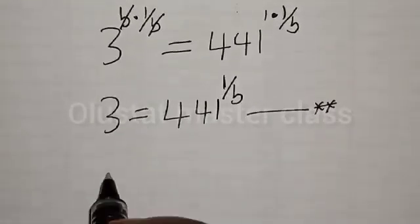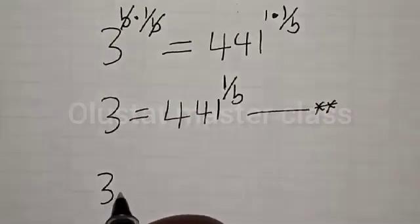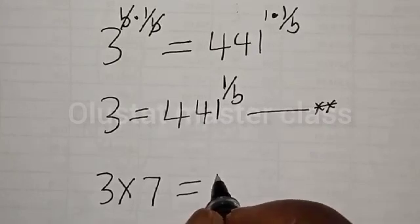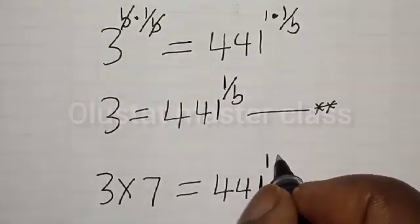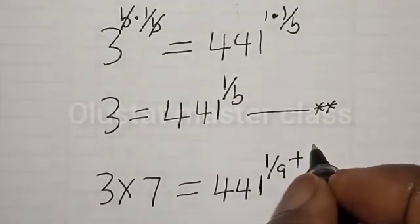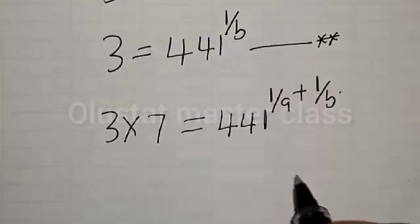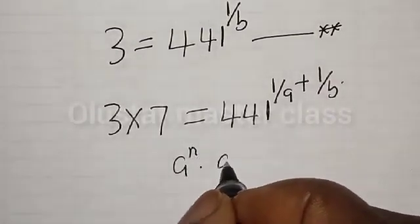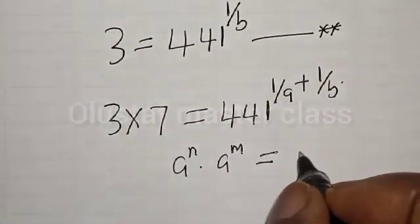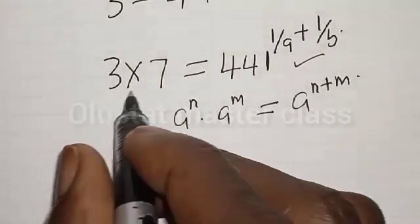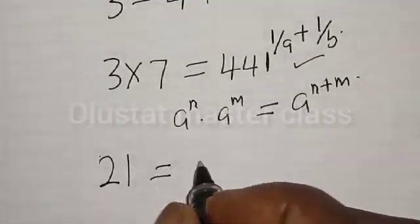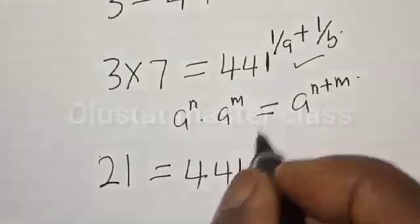Now, we have equation star as 7 equals 441 raised to power 1 over A, and equation double star as 3 equals 441 raised to power 1 over B. Let's multiply equation star and equation double star together. That is, 3 multiplied by 7 will be equal to 441 raised to power 1 divided by A plus 1 divided by B. We have 3 times 7, that is 21, is equal to 441 raised to power 1 over A plus 1 over B.